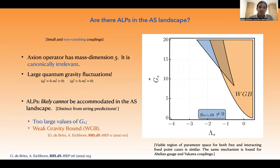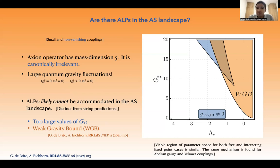The important point here is that even though the axion operator has mass dimension 5 in d equals 4, it is canonically irrelevant. This would require that quantum gravity fluctuations should be large enough to turn an irrelevant operator into a relevant one. We conclude that ALPs would not be accommodated in our landscape because the required large values of the gravitational parameters are unfavored in our approach.